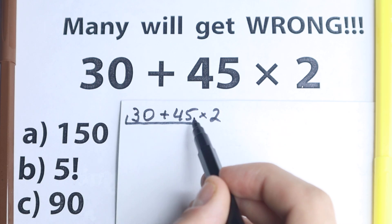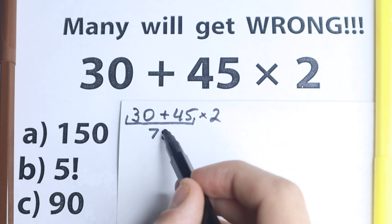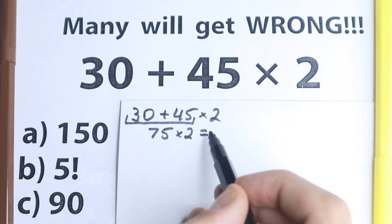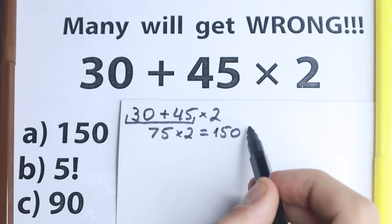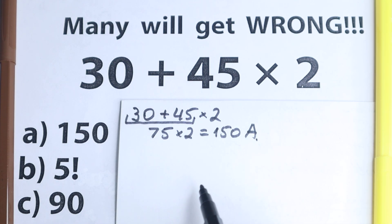30 plus 45 equals 75, and times 2 equals 150. And they look at this option and they say, option A is the correct answer. We have option A is the correct answer.